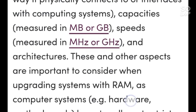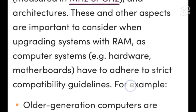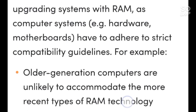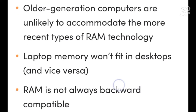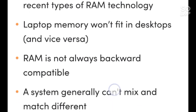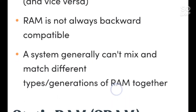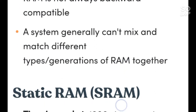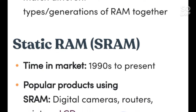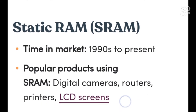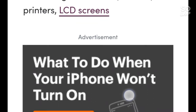Larger pieces of paper allow you to scratch out more and bigger ideas at one time before having to erase — more RAM inside a computer shares a similar effect. RAM comes in a variety of shapes; the way physical contacts interface with computing systems, capacities measured in MB or GB, speeds measured in MHz or GHz guide architecture. These and other aspects are important to consider when upgrading systems with RAM, as computer hardware and motherboards adhere to strict compatibility guidelines. Older generation computers are unlikely to accommodate more recent types of RAM technology; laptop memory won't fit in desktops and vice versa. RAM is not always backward compatible — a system generally cannot mix different types or generations of RAM together.